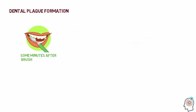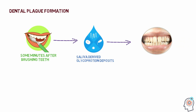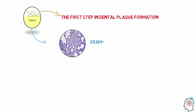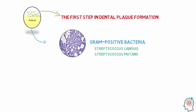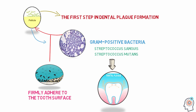Dental plaque formation starts almost immediately after you brush your teeth. Within minutes of brushing, salivary glycoprotein deposits start to cover the tooth surface, forming what is referred to as the pellicle. The formation of the pellicle is the first step in dental plaque formation. The pellicle is then colonized by gram-positive bacteria such as Streptococcus sanguinis and Streptococcus mutans, forming what becomes known as dental plaque.